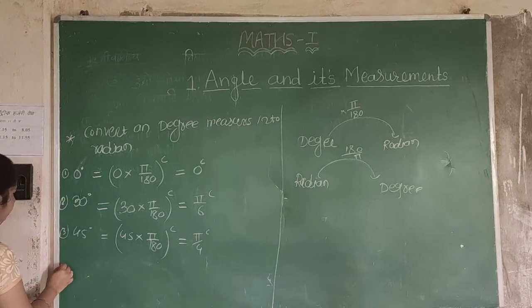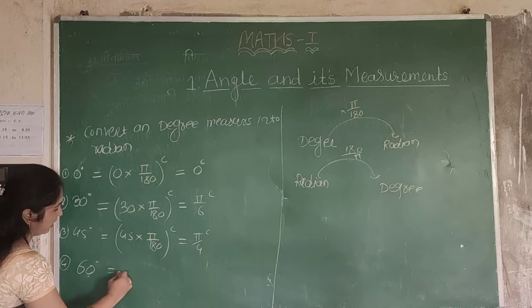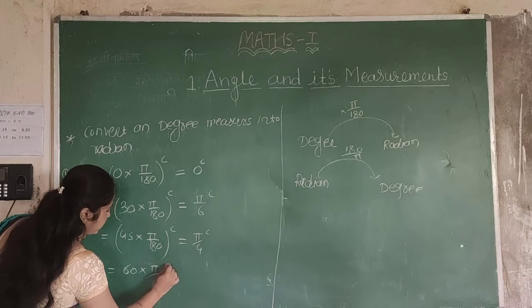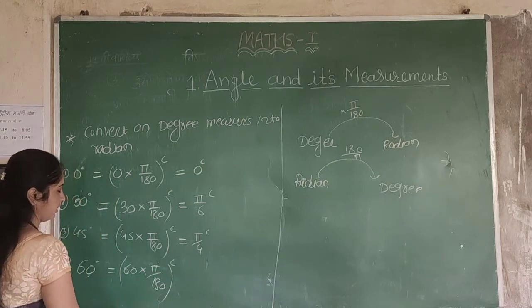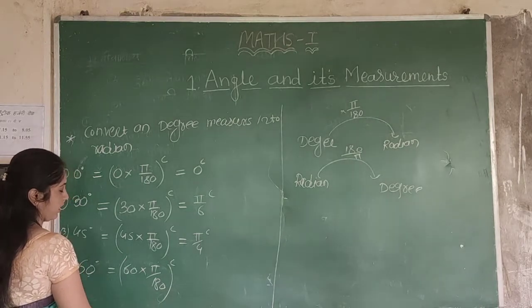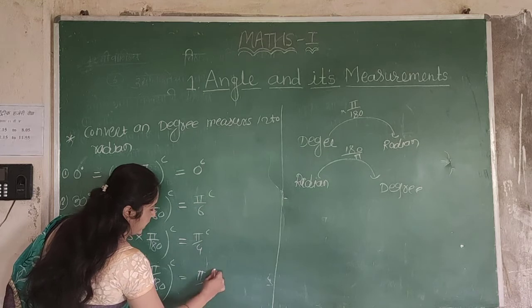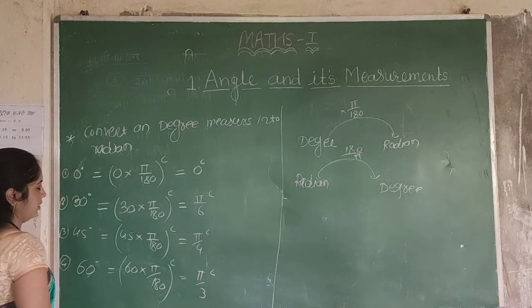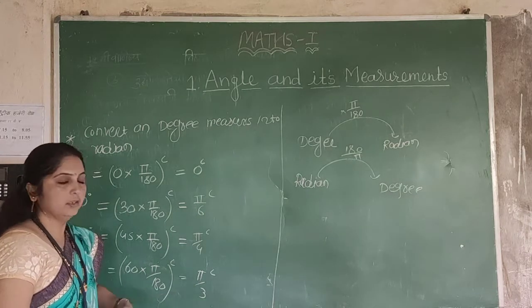Then the fourth standard angle is 60 degrees. Again multiply by pi by 180. So 60 into pi by 180 — the zeros cancel and 6 goes into 18 — giving pi by 3. So 60 degrees equals pi by 3 radians.